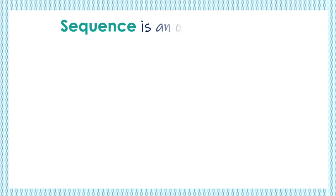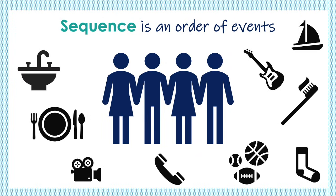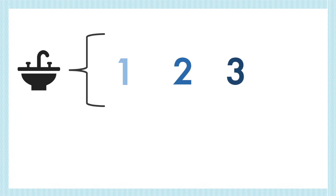Sequence is an order of events. As people, everything we do can be broken into a series of steps we follow to complete the task. The order of events we follow to make sure the task is completed the correct way is called an algorithm.